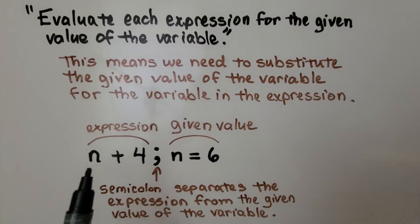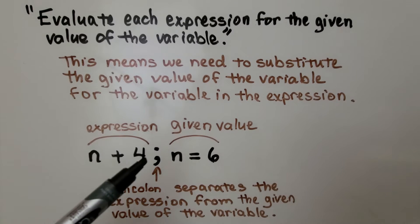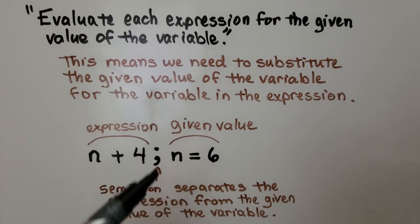So here we have an expression, n plus 4, and the given value is that n is equal to 6. You can see we have a semicolon here, and it separates the expression from the given value of the variable.